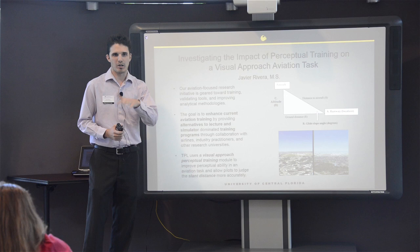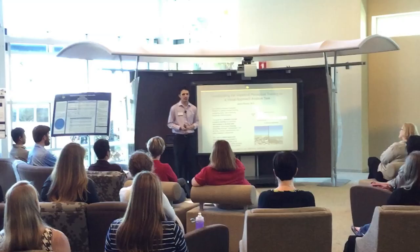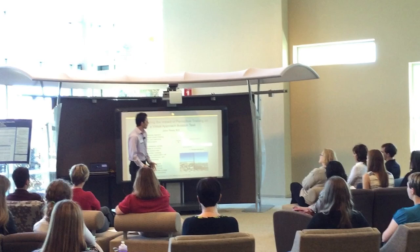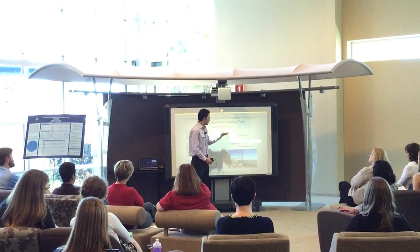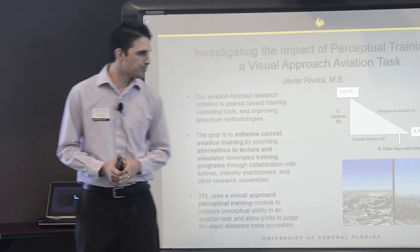A visual approach is essentially when the aircraft is descending and a pilot can spot their runway visually. When this happens, they need to maintain the aircraft at what is called a three-degree glide slope. As you can see in this image, the glide slope is the angle formed between the altitude of the aircraft and its ground distance to the runway. If you're too high on approach, the aircraft may overshoot the runway. If you're too low, the angle decreases and you may fall short of the runway, which can lead to accidents and unwanted outcomes.